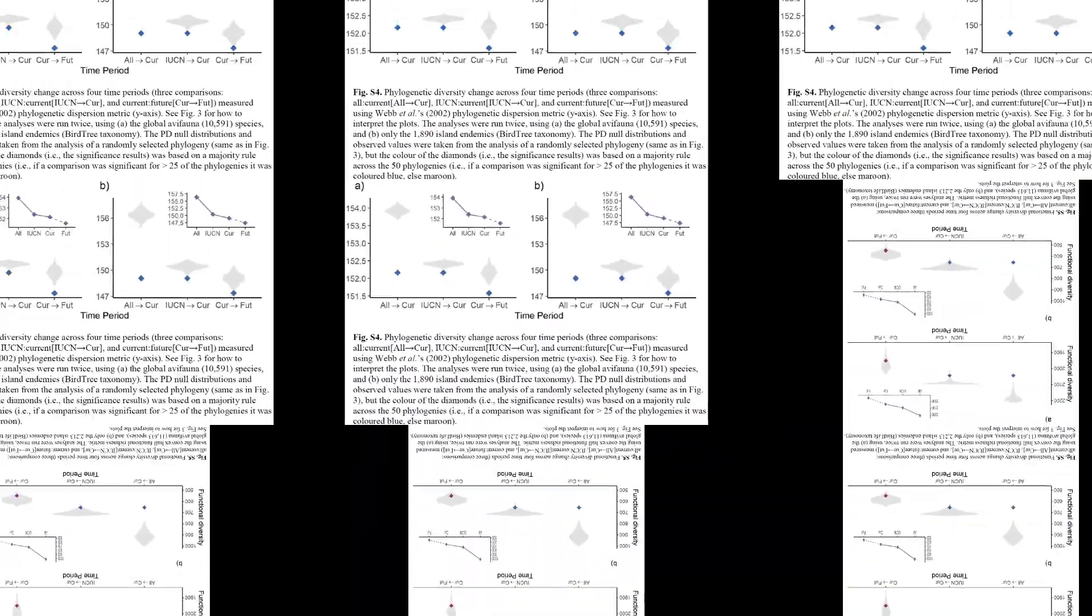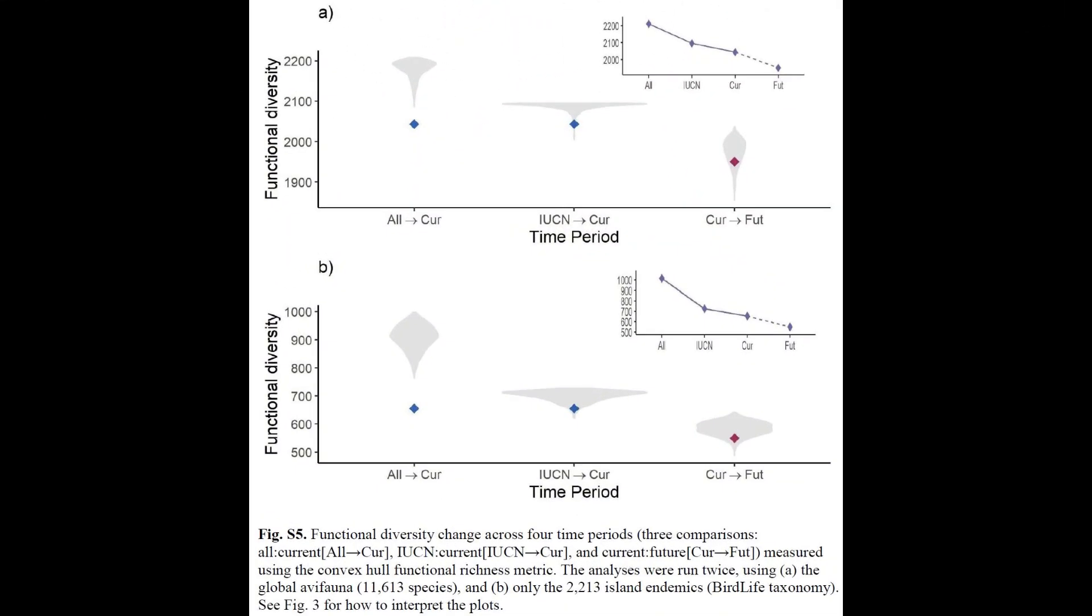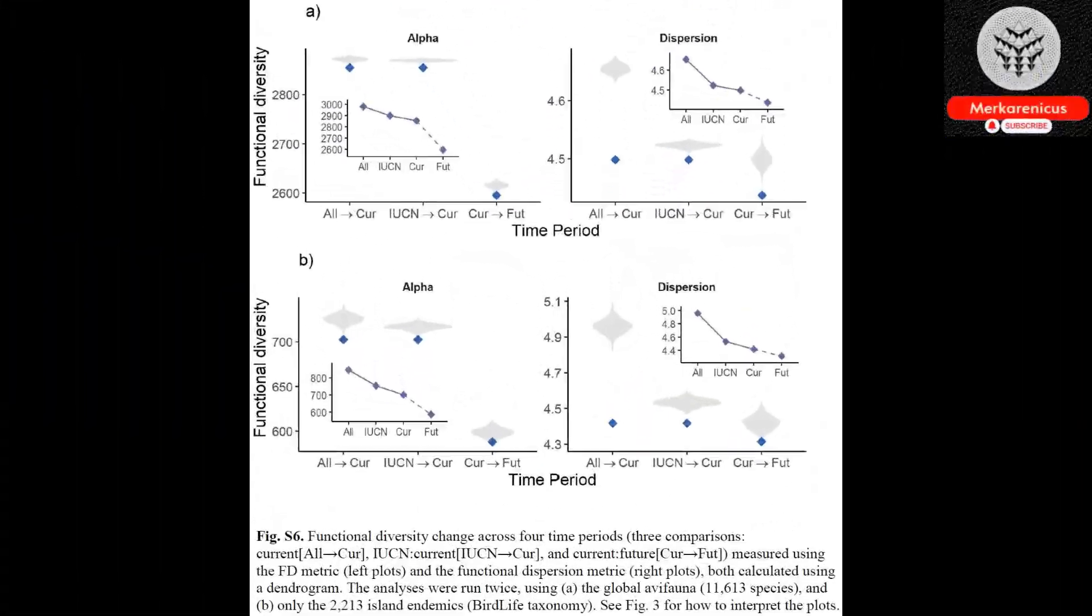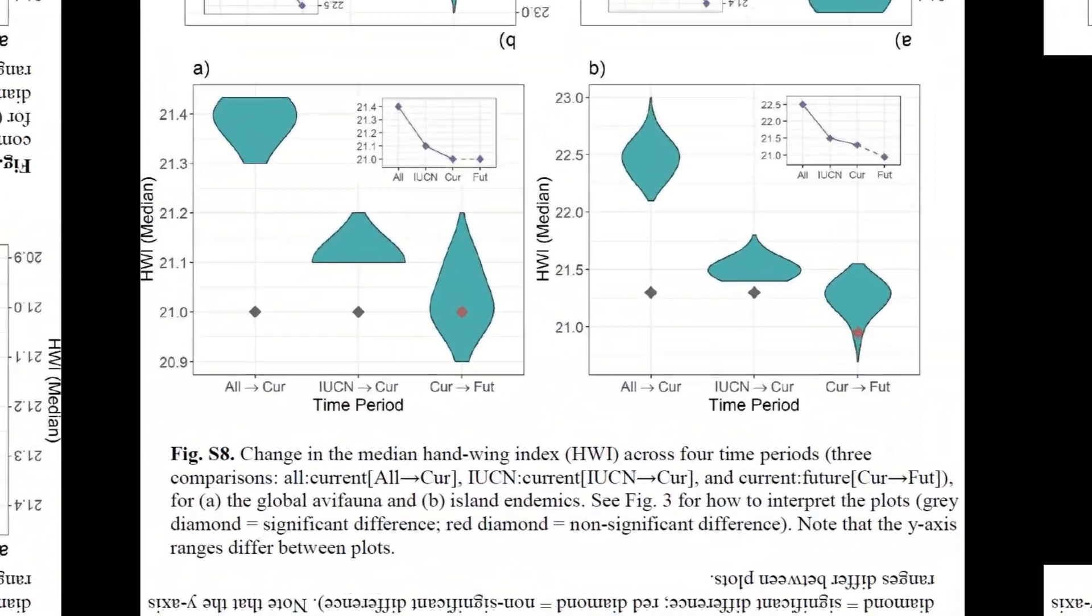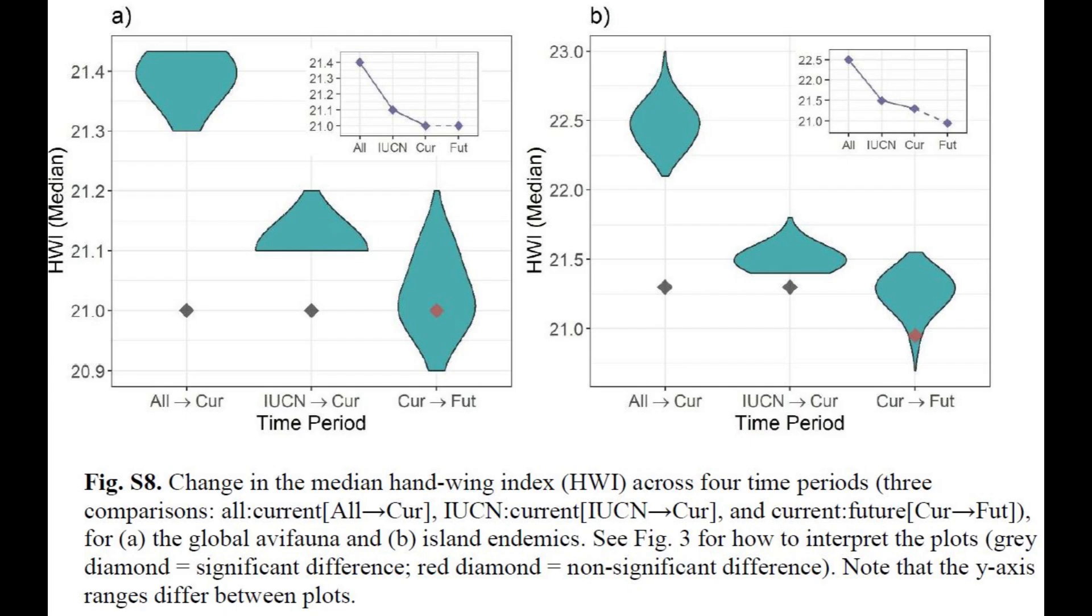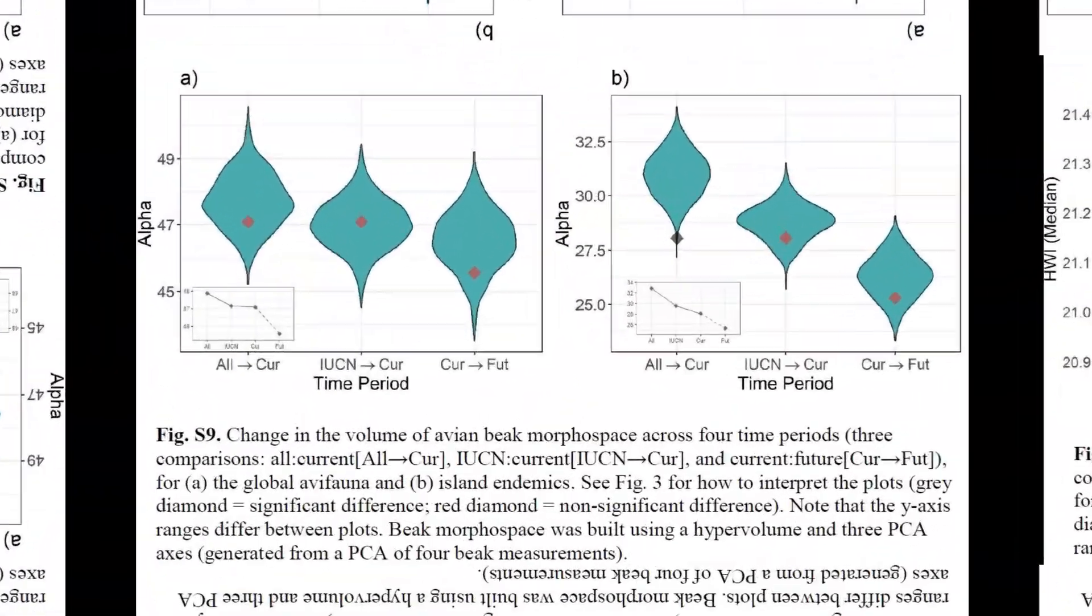The evidence currently available indicates that at least 600 bird species have become extinct due to human activities since the late Pleistocene, a period marked by the global expansion of modern humans. This includes well-documented cases such as the dodo and the recently declared extinct Kauai ʻŌʻō songbird of 2023.